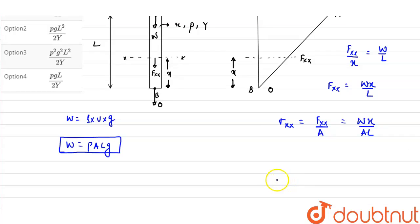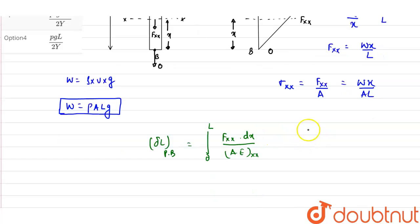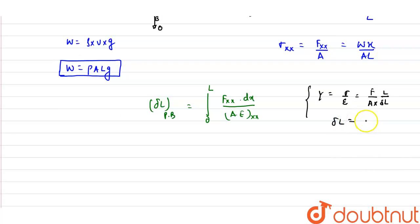Now we can find the extension of the prismatic bar, so ΔL for this prismatic bar will be equals to integral of 0 to L into Fxx into dx upon AE of the cross section xx. We got this relation from Young's modulus, which is stress upon strain. Stress is force upon area and strain is change in length upon original length. So from here the change in length or the elongation comes out as FL upon AY.